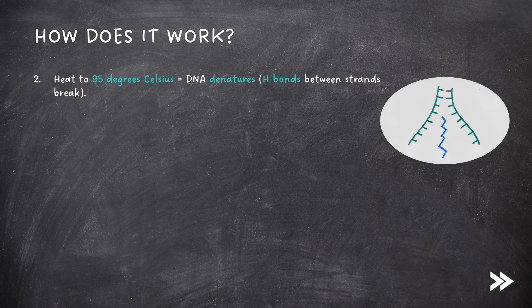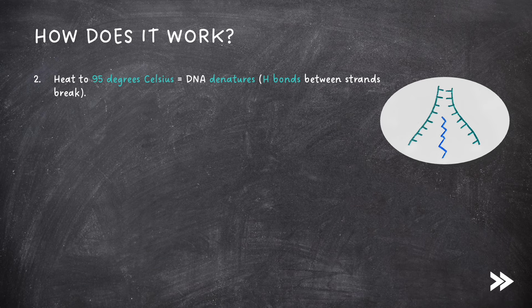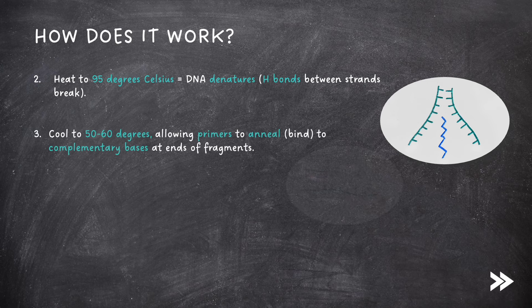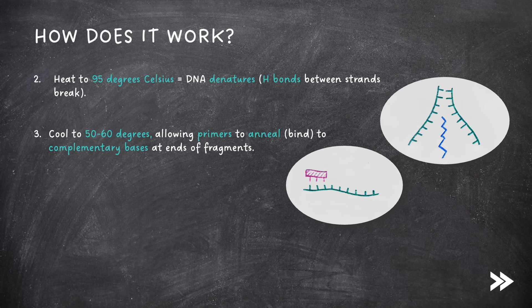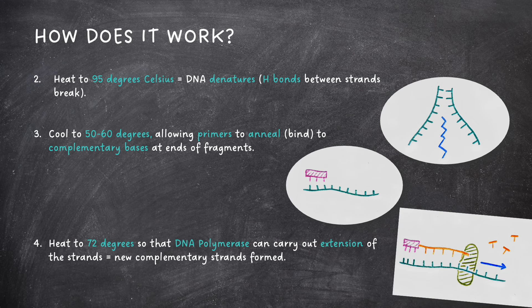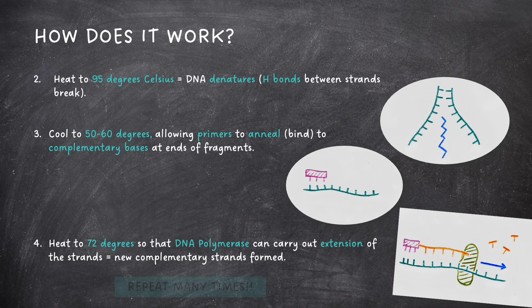The next step in PCR is to heat to 95 degrees Celsius, so that DNA denatures, meaning that hydrogen bonds between strands break. Then we cool the mixture to 50 to 60 degrees, allowing primers to anneal, i.e. bind, to complementary bases at the ends of fragments. Finally, we heat to 72 degrees, so that DNA polymerase can carry out the extension of the strands, meaning that new complementary strands are formed. We repeat this process many times.